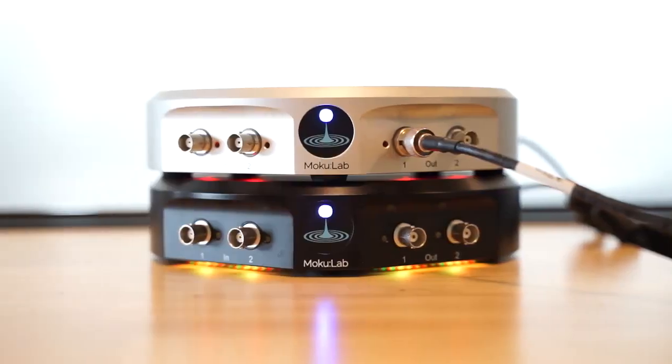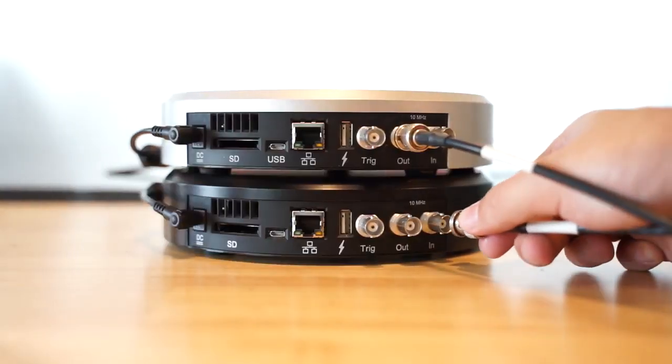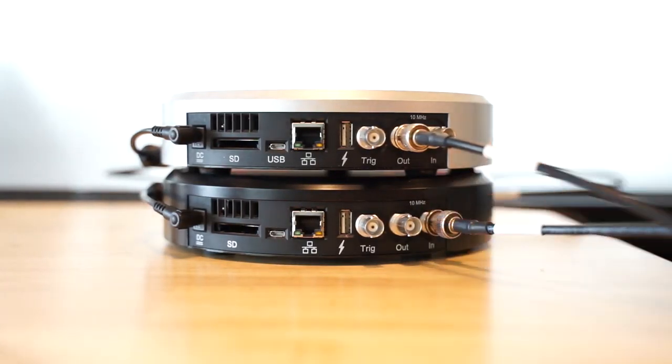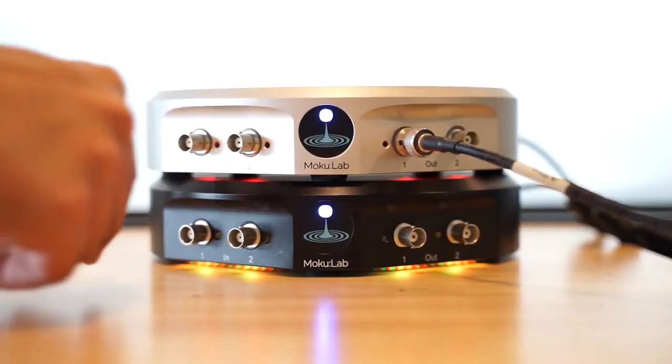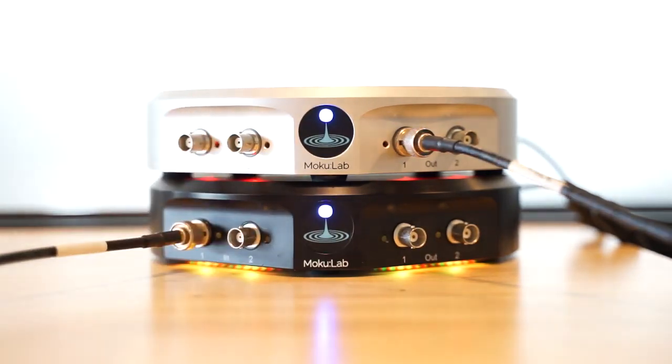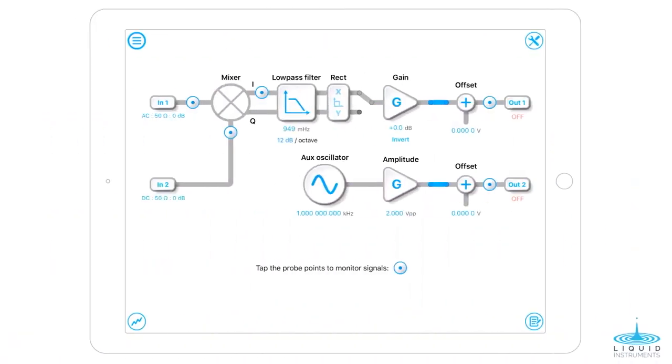To set this up, we will operate the silver Moku as a waveform generator to produce our input signal, and the black Moku functions as the lock-in amplifier instrument. Connect the 10 MHz reference clocks between the Moku's to ensure their internal clocks are synchronized. Then, connect the 1 kHz sine wave output to the lock-in amplifier's input. Now, take an iPad and launch the lock-in amplifier instrument.